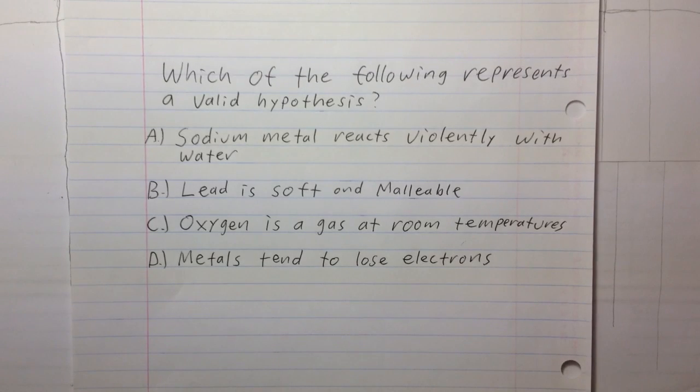You can see that they all are observations, but the answer is actually D, because it can be tested, whereas the other ones are just pure observations. They're not easily tested. You could perform a test to prove that metals tend to lose electrons or disprove that.